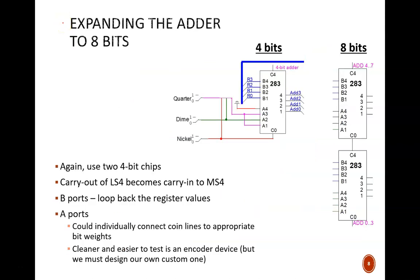One more device needs to be expanded: the adder. Again, we can double up on the 4-bit chips. The carry out bit from the less significant adder becomes the carry in to the more significant adder, just like the cascading adders we saw previously.